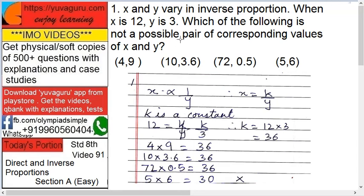So what is given? One value is given: x is 12 when y is 3. So x equals to k upon y, k is a constant. Then we have to find k first. So 12 equals to k upon 3. Because one value is given, therefore k equals to 12 into 3, which is 36.